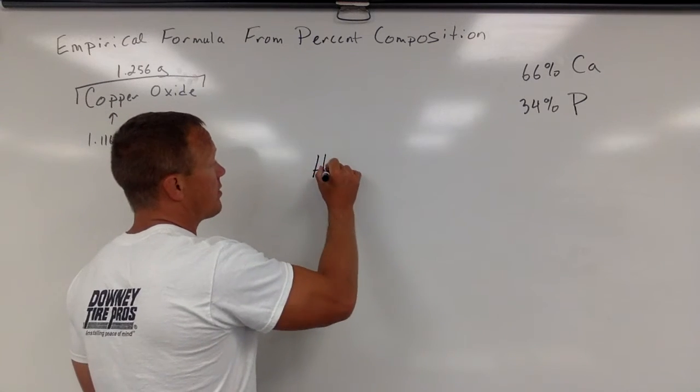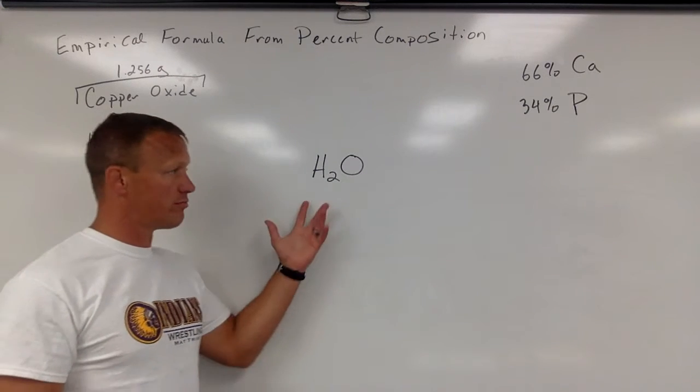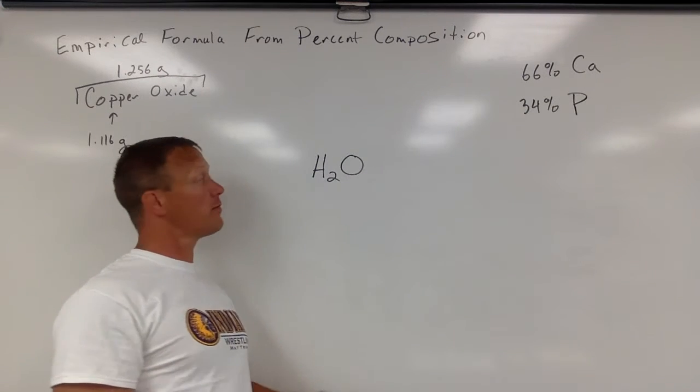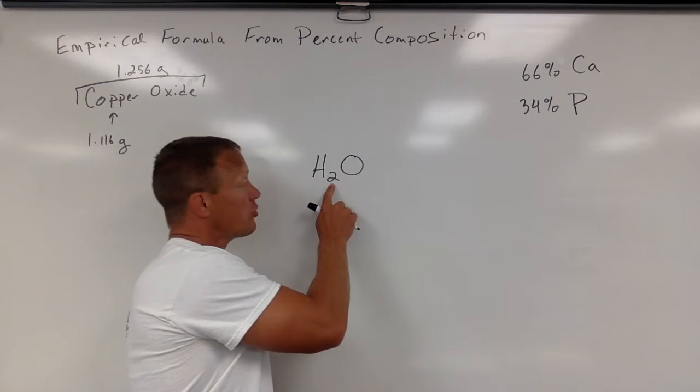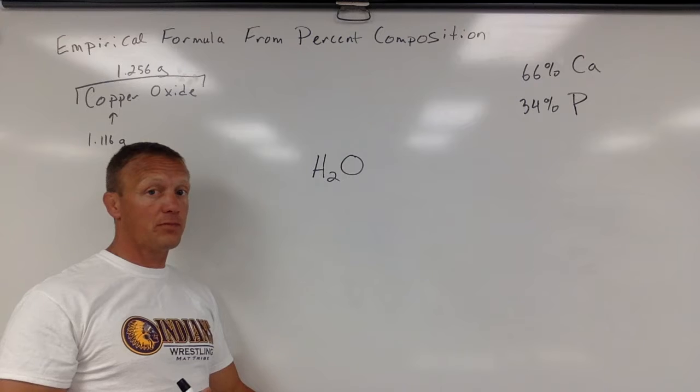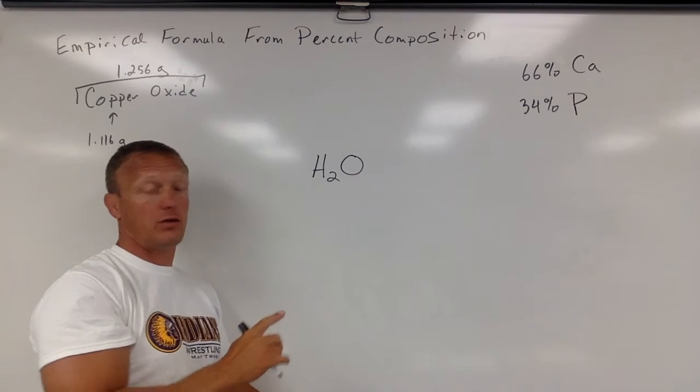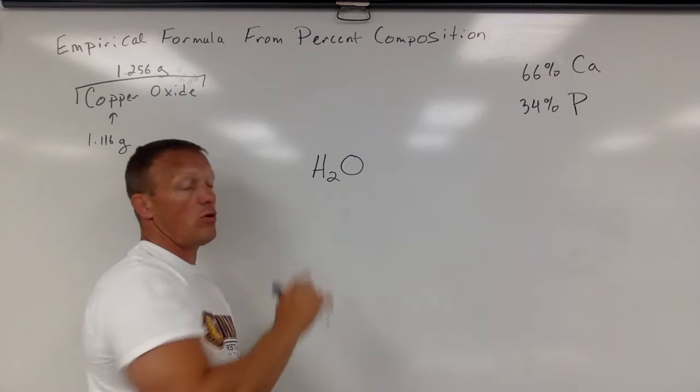So let's think about for a minute what these ratios mean. For water, this is the empirical and the molecular formula for water. Remember this 2 means there's two atoms of hydrogen for every one atom of oxygen, or we could say that if we had a mole of these there would be two moles of hydrogen for every one mole of oxygen.